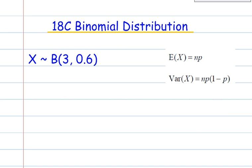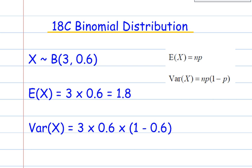OK, the formula sheet also gives the expected value and the variance. These are very simple to follow. So, the expected value is n times p, and the variance is np times 1 minus p. So, the expected value, we'd obviously have 3 times 0.6, which is 1.8. And for the variance, we'd have 3 times 0.6 times 1 minus 0.6, which is 0.4, and that gives us 0.72.